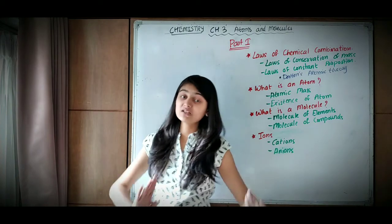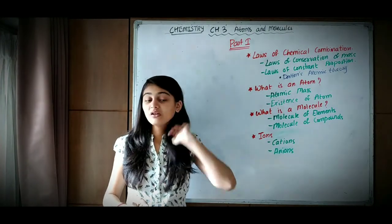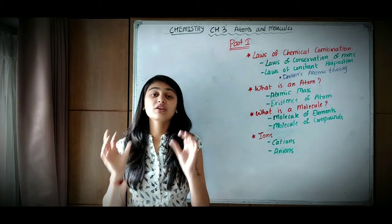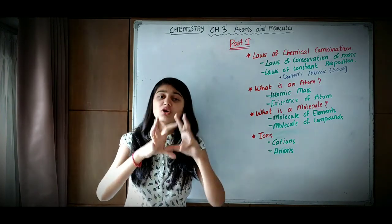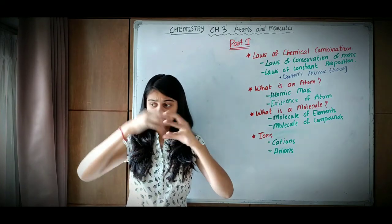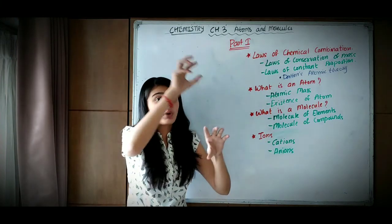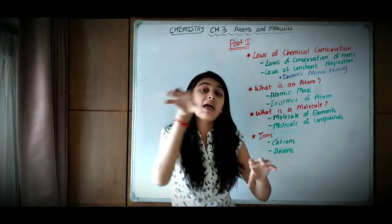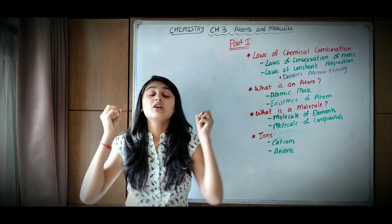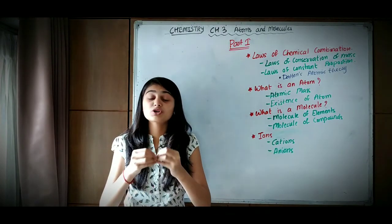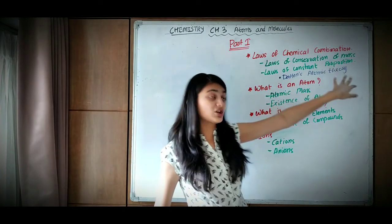The law of constant proportion means that, for example, in water there is a particular proportion of hydrogen and oxygen. In every molecule of water, we will find the same proportion. The proportion is constant in all elements of water. Whether we take water from here or from there, the ratio will be the same — the proportion of the chemical combination will be the same. So it is known as the law of constant proportion.